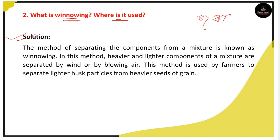The method of separating the components from a mixture is called winnowing. In this method, heavier and lighter components of a mixture are separated by wind or by blowing air. This method is used by farmers to separate lighter husk particles from heavier seeds.